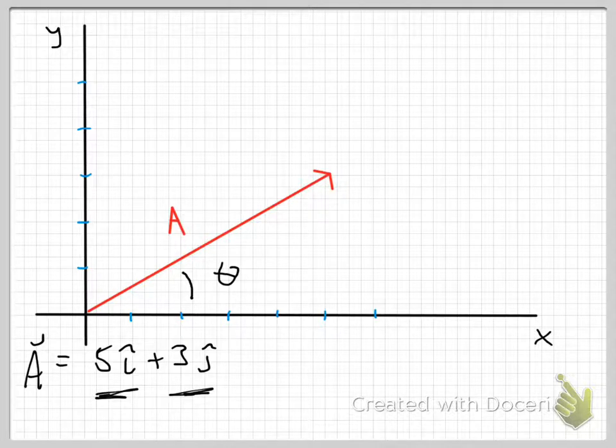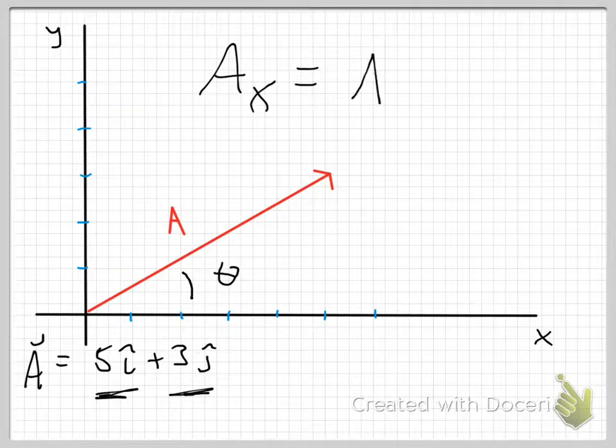So I can say that A sub x, which is going to be the notation we're going to use for the x component of the A vector, A sub x is now equal to the magnitude of A. And I'm probably never going to write this in class explicitly because it takes a long time. That's actually what we're saying. The magnitude of the A vector.